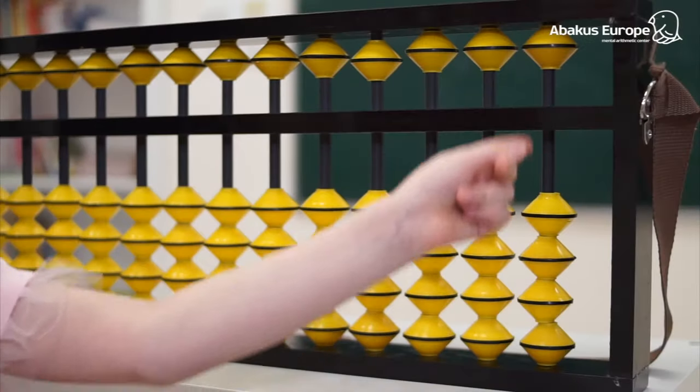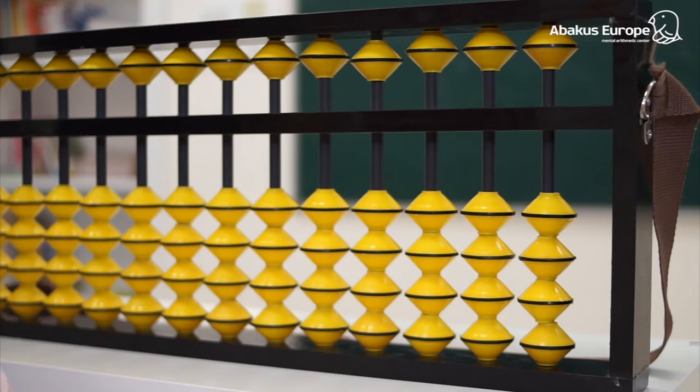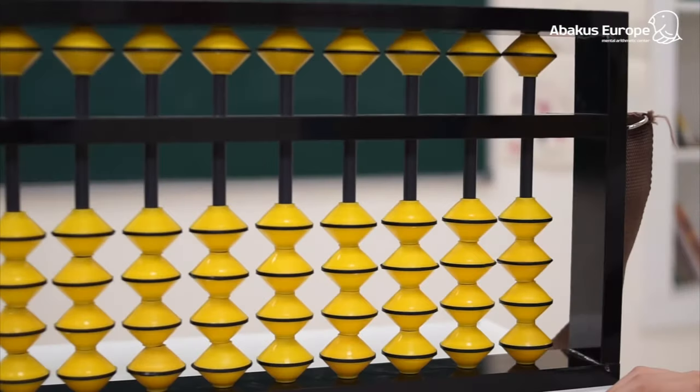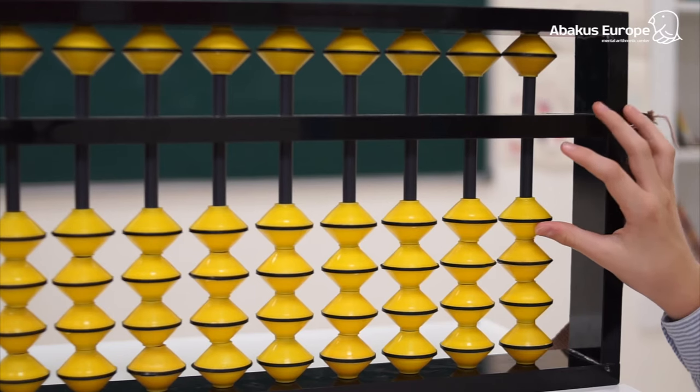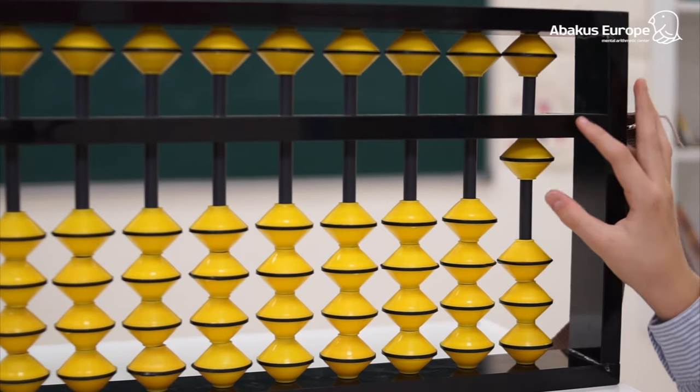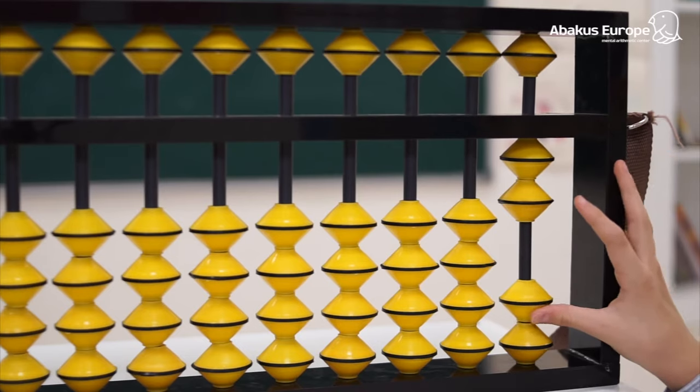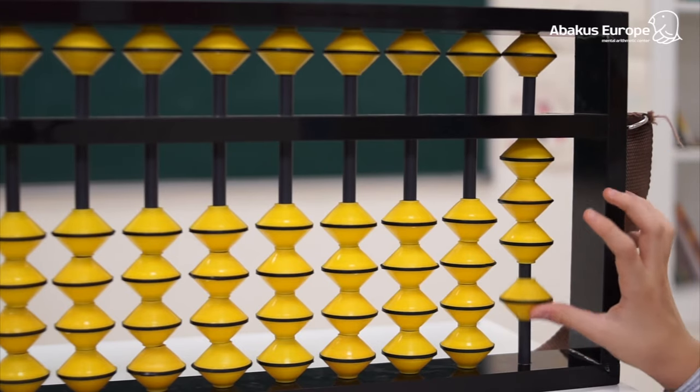Let's go to the first rod at the right-hand side which is responsible for the units. The value of each lower bead is one. So, if we move one lower bead to the beam, then we will have the number one. If there are two beads touching the beam, then two. Three beads, three. Four beads, four.